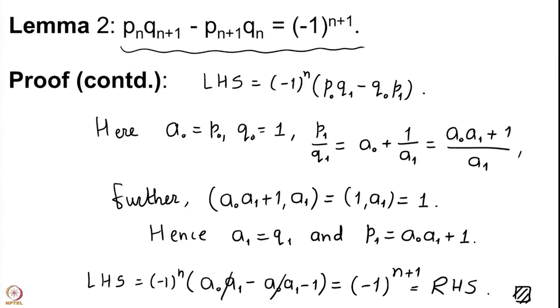If n is odd then (-1)^{n+1} equals 1; if n is even then (-1)^{n+1} equals minus 1. So this is the proof of lemma 2, which was simply a computation using the recursion already established in lemma 1. Lemma 1 is really the basis of this proof and is the most delicate thing to prove, which we now turn to.